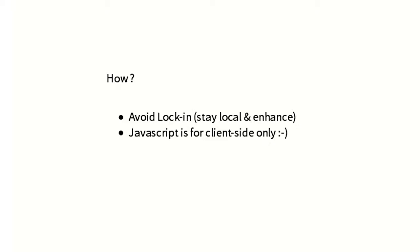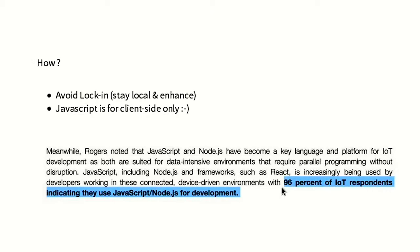What we want to do is to stay local, have everything in-house — maybe on a little Raspberry Pi in your house or whatever. Also, a lot of people are using JavaScript: 19% of Internet of Things respondents indicating they use JavaScript for development. For server-side stuff, I'm not quite fond of it, and I prefer to use Python.